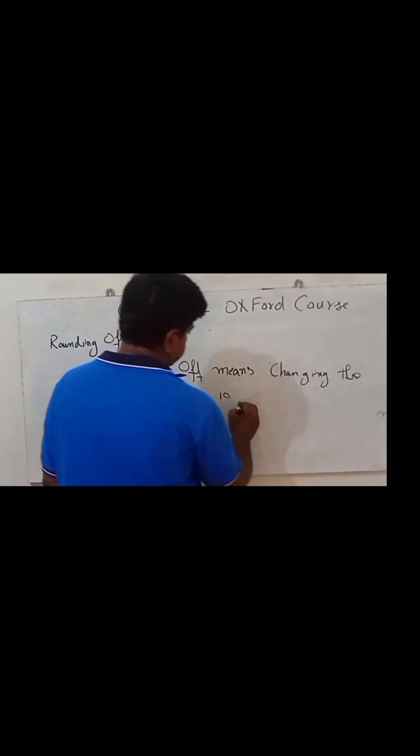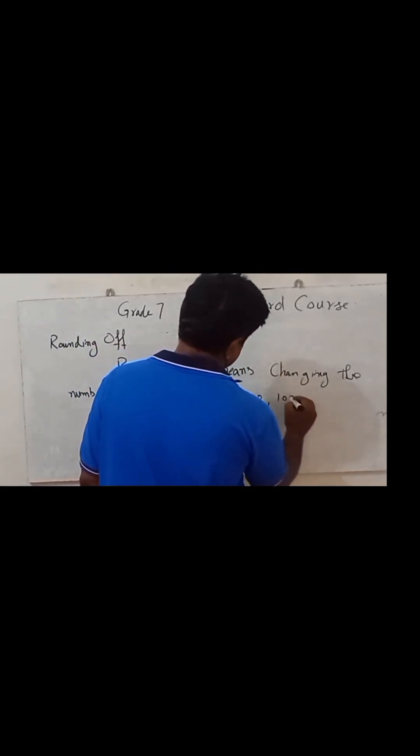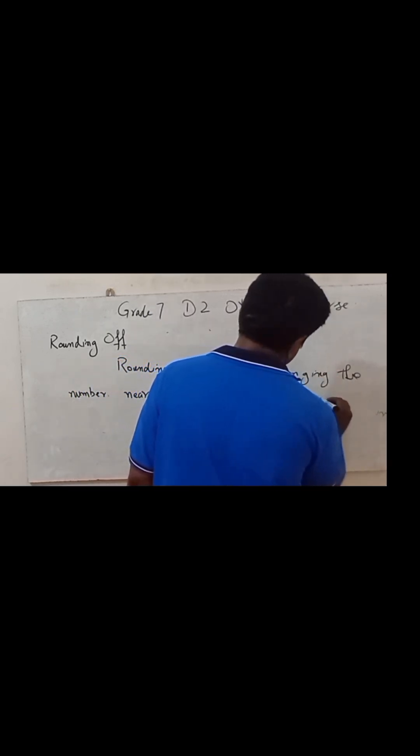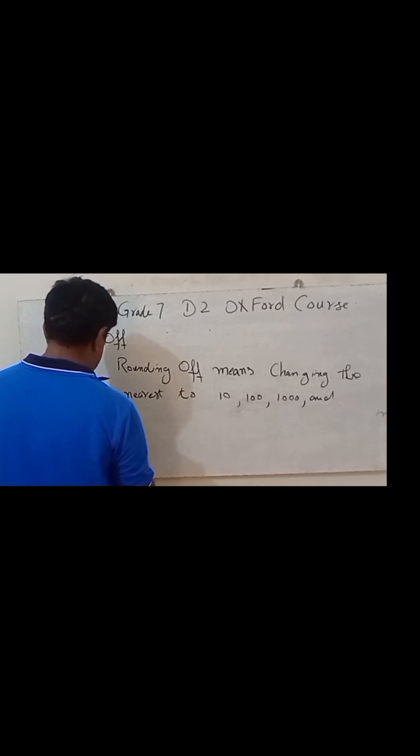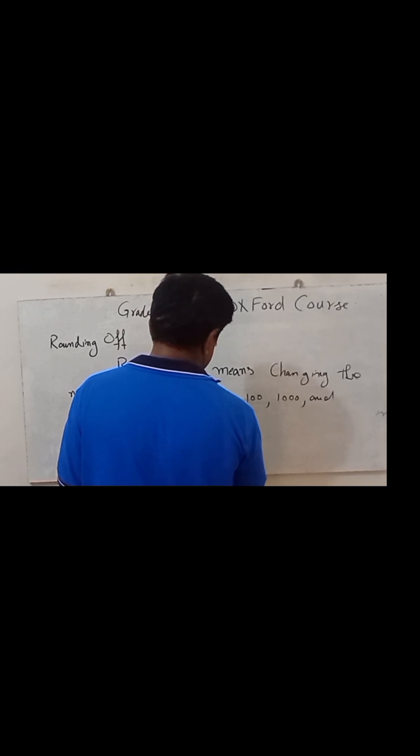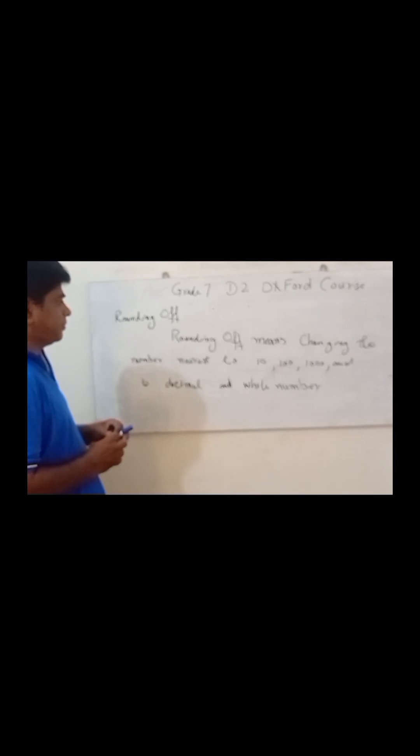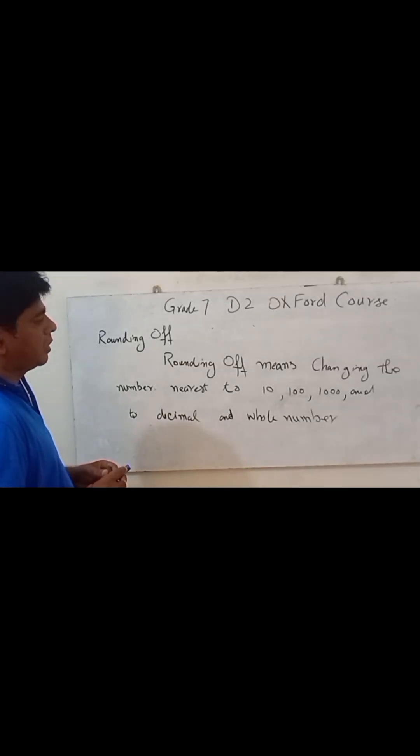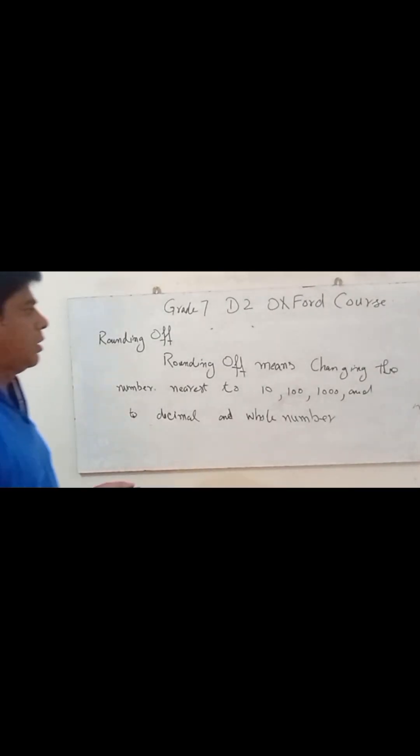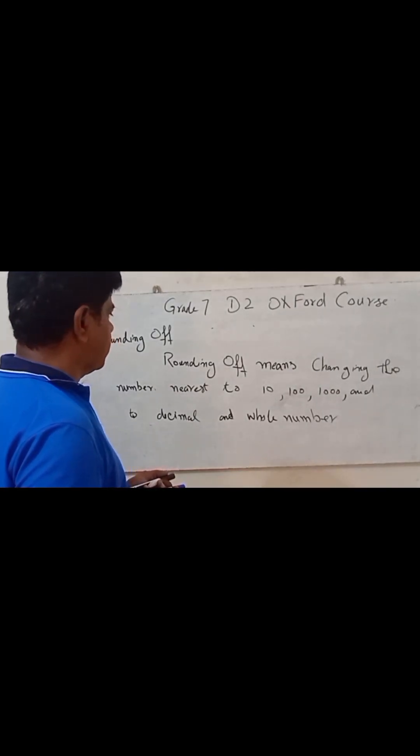Rounding off means changing the number to the nearest ten, hundred, thousand, ten thousand, and so on, and to decimal and whole numbers. The definition means changing the number nearest to ten, hundred, thousand, and to decimal and whole numbers.